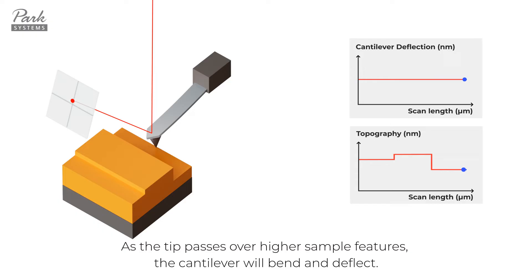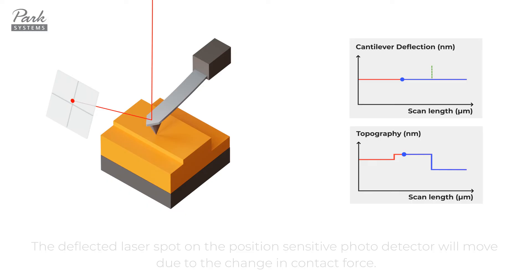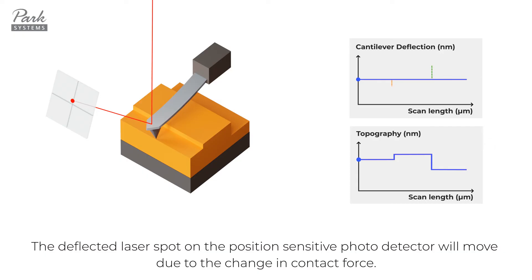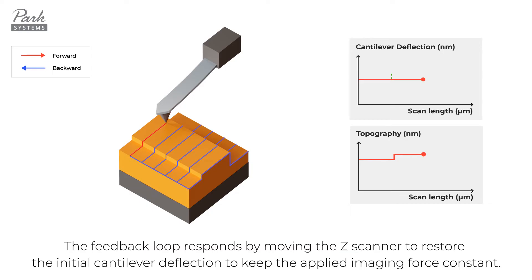As the tip passes over higher sample features, the cantilever will bend and deflect. The deflected laser spot on the position-sensitive photo detector will move due to the change in contact force. The feedback loop responds by moving the Z-scanner to restore the initial cantilever deflection to keep the applied imaging force constant.